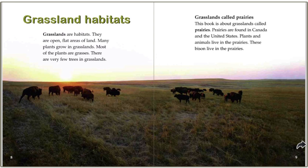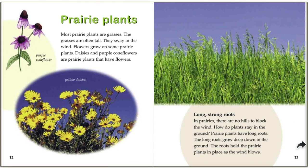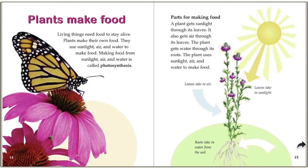Grasslands are habitats. They are open, flat areas of land. Many plants grow in grasslands and most of these plants are grasses. There are very few trees in grasslands. Grasslands called prairies are found in Canada and the United States. Plants and animals live in the prairies — these bison live in the prairies. So from reading these two pages I know that bison also live in the prairies.